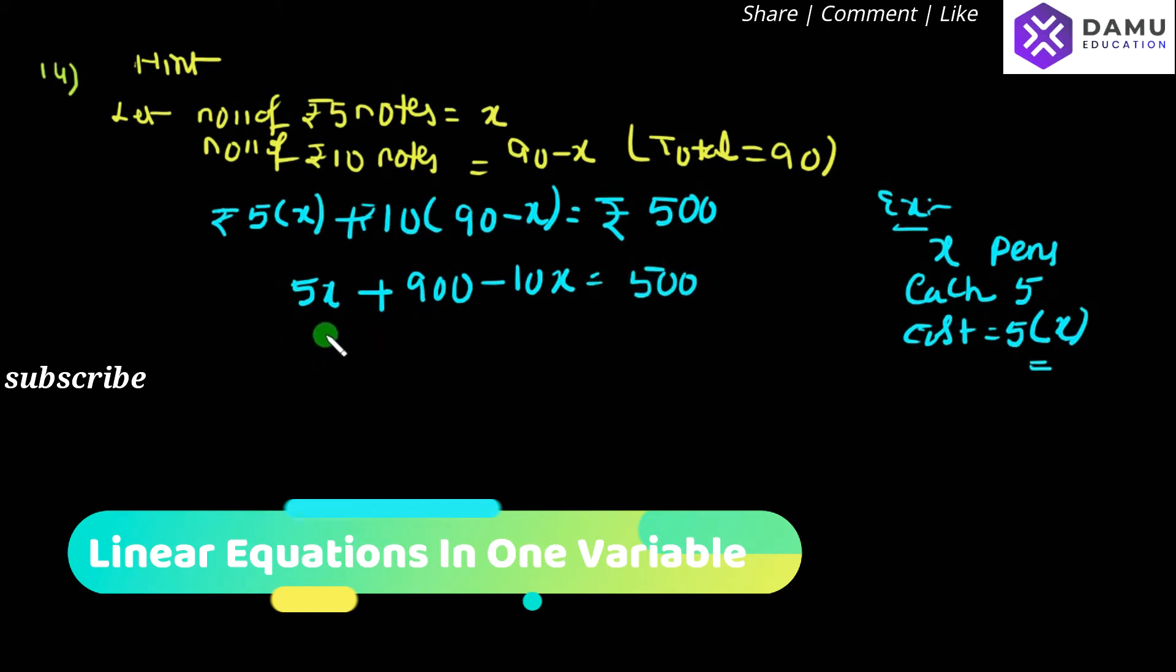Then 5x minus 10x. So 5 minus 10, let's take x common from both. We get minus 5x plus 900 will be equal to 500.